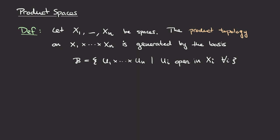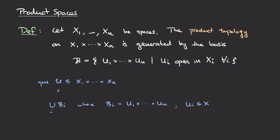This definition uses the concept of a basis. Recall that if ℬ is a basis, the open sets in the topology generated by ℬ are unions of basis elements. So an arbitrary open set U in the product space X_1 × ··· × X_n is a union of basis elements B_i, where each B_i has the form U_1 × ··· × U_n with each U_i open in X_i.